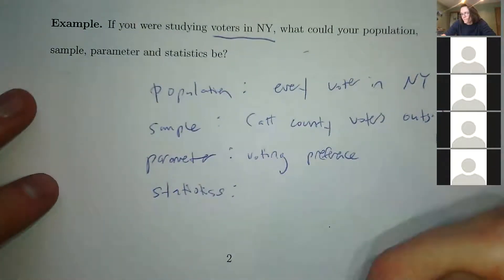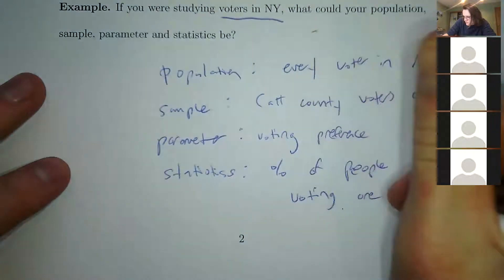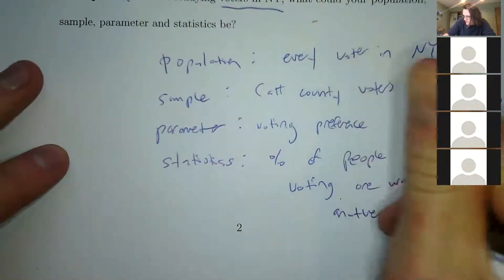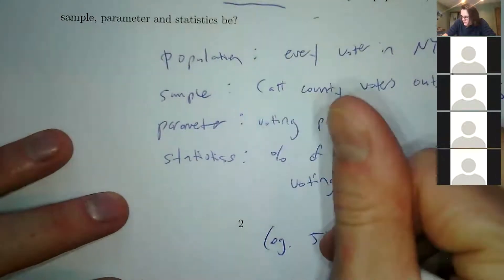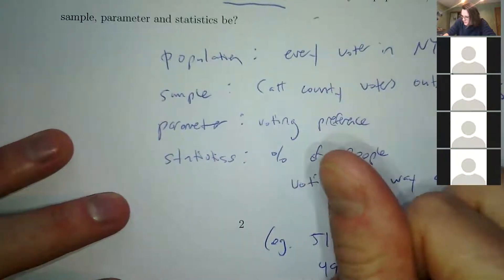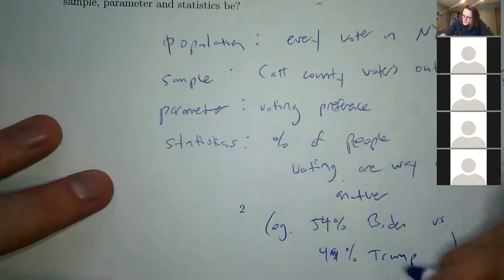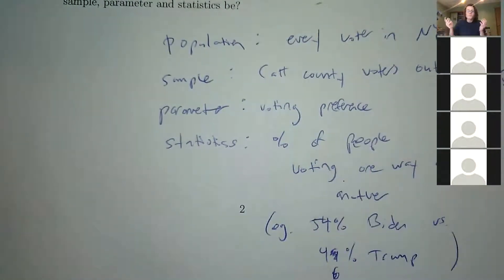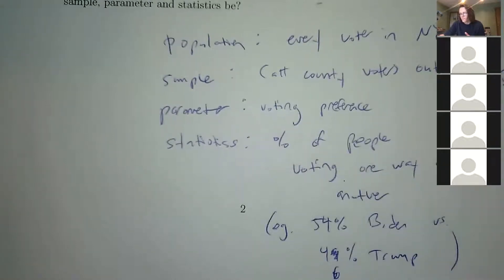The statistics are the numbers you actually compute from the data. For example, the percentage of people voting one way or another — maybe 51% Biden versus 49% Trump, or 70% of people outside Rite Aid voted for Trump. Statistics are the calculated data you pull from your raw numbers. Any questions about these definitions?